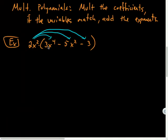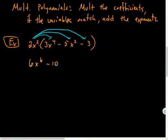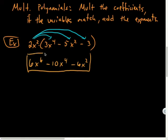When I multiply, I'm going to multiply the coefficients. So 2 times 3 is 6, and I add the exponents. x² times x⁴ is x⁶. 2 times negative 5 is negative 10. x² times x² is x⁴. 2x² times negative 3 is negative 6x². And then I'm done. It looks like I don't have any simplifying to do.